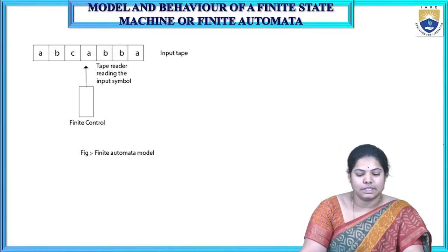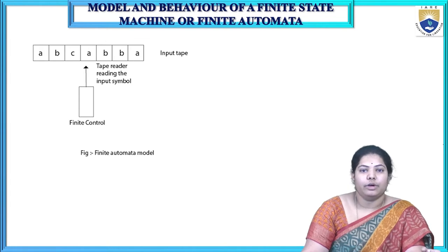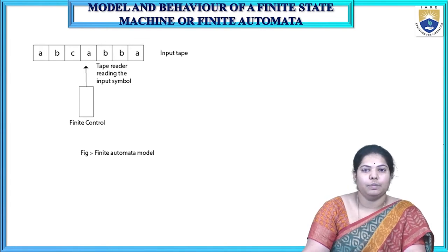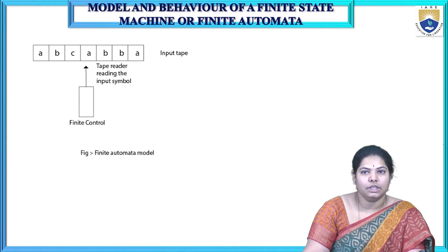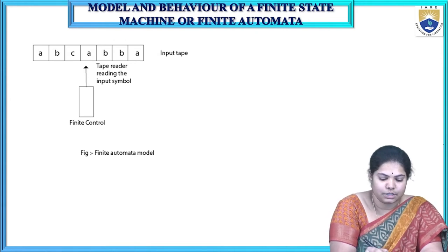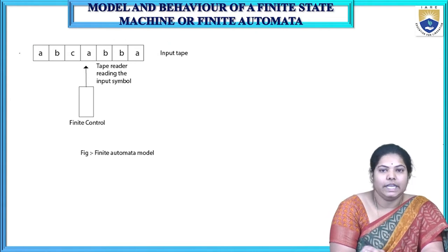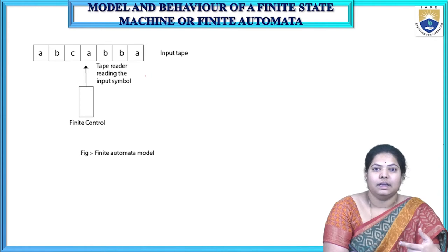We are going to discuss about the model and behavior of finite automata. A finite automata we can also call it as a finite state machine. This is the pictorial representation of how the finite automata is going to be working. First of all, it contains a tape — a finite automata is used to read strings or any patterns.